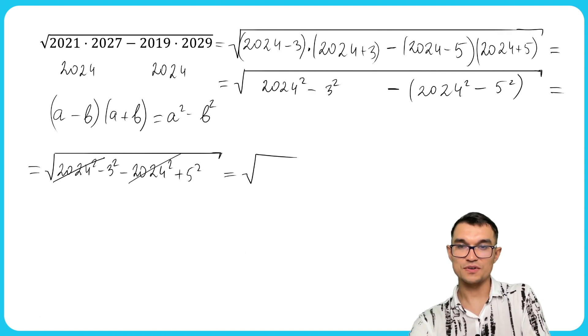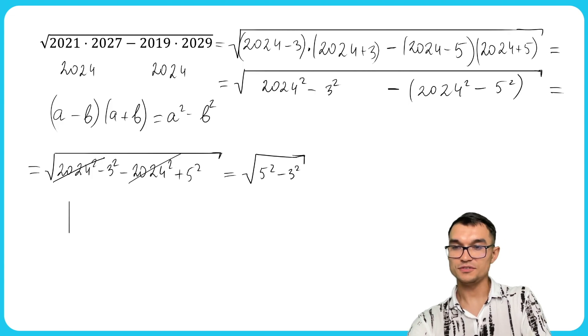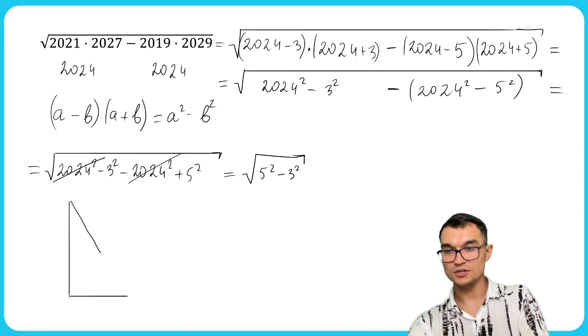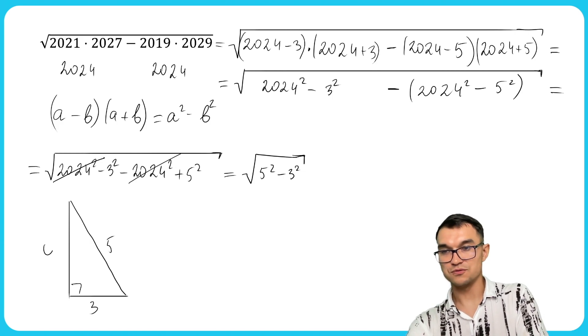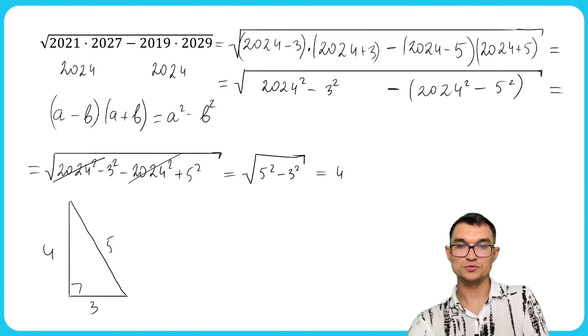And we have 5 squared minus 3 squared under a square root. And if you know what an Egyptian triangle is, then you will see the answer right away. So the answer is 4. This is all equal to 4.